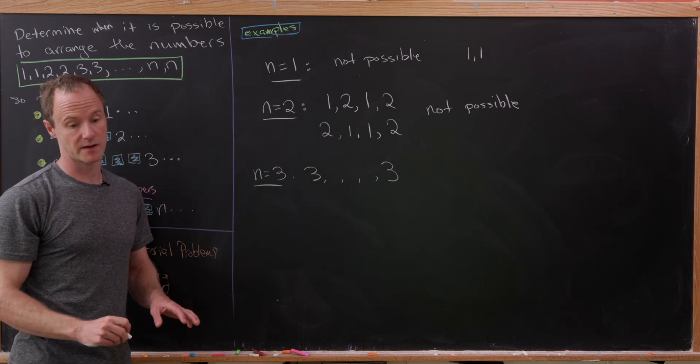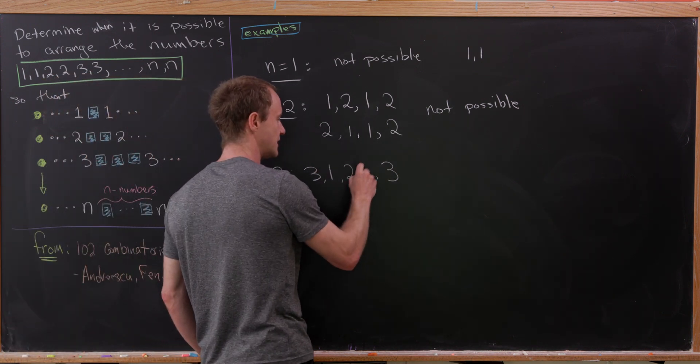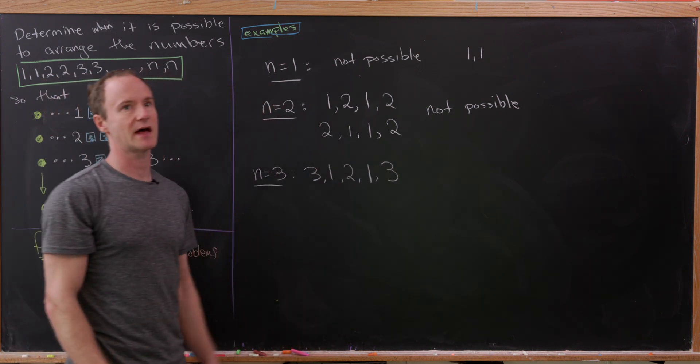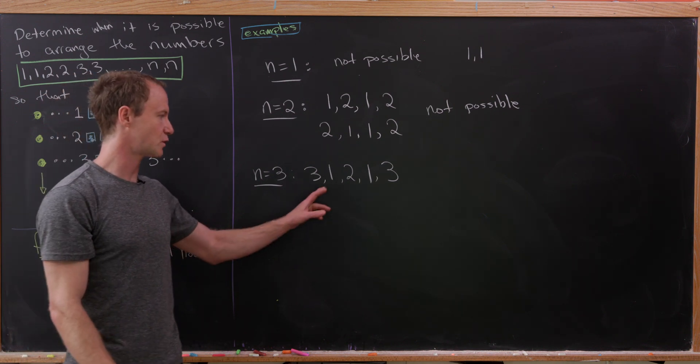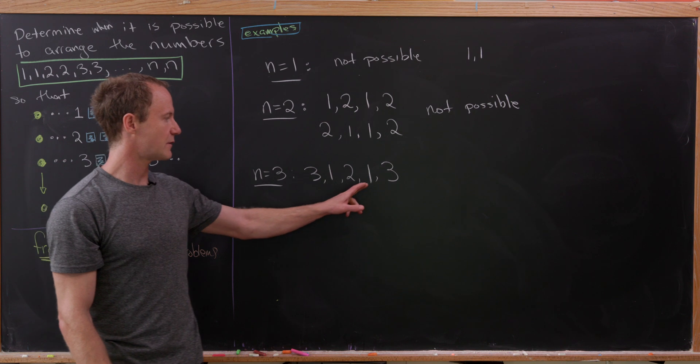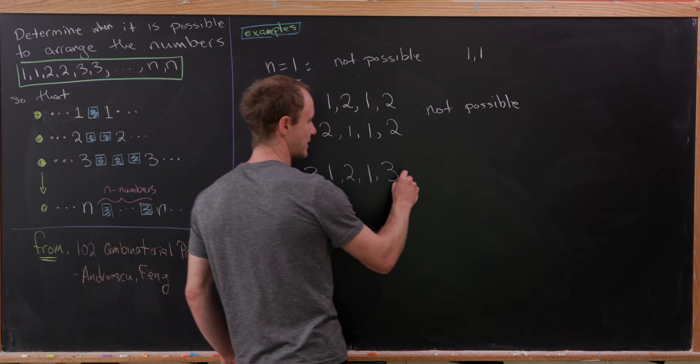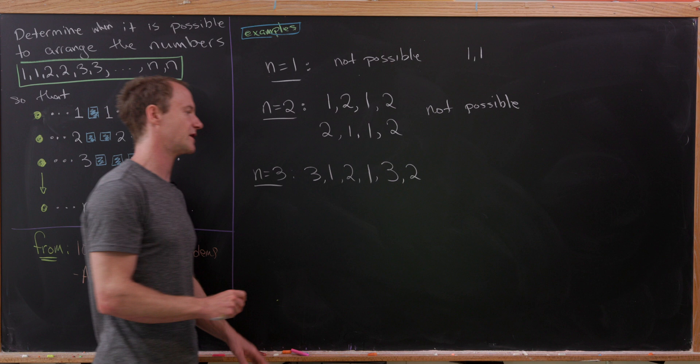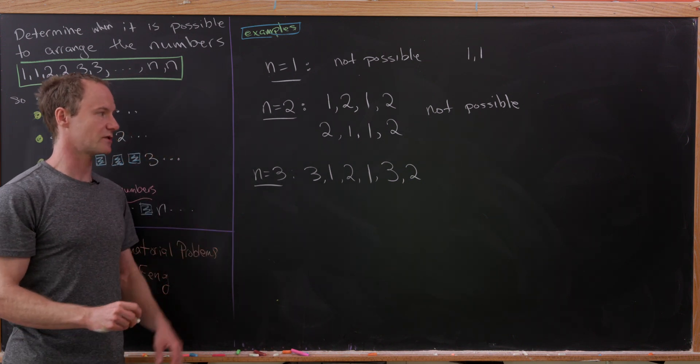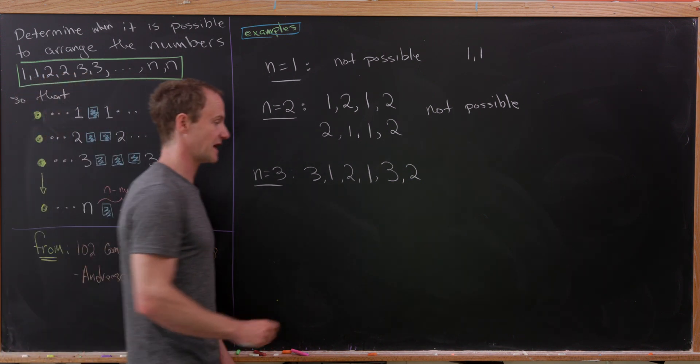I think maybe a nice way to do it would put a 1 here, a 2 here, and a 1 here. Notice that satisfies the condition that between the two appearances of 1, we've got a 2. And then, we've got two numbers here, 1 and 3. That makes it pretty obvious to put a 2 right here. So that means there are two numbers between the two appearances of 2.